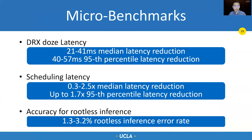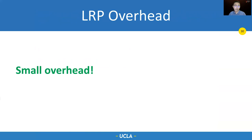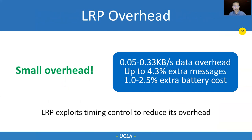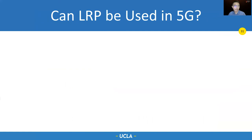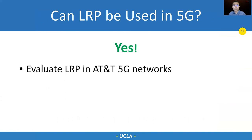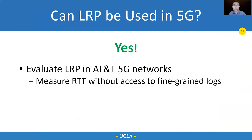With these improvements, LRP only generates small overhead — small extra data, small extra signaling messages, and marginal battery costs. We reduce LRP's overhead by carefully exploiting timing control. LRP can also benefit 5G applications. We evaluate this on AT&T 5G networks. Since we don't have access to any tool that can collect 5G fine-grained traces, we simply measure the RTT with and without LRP. The experiments show that LRP can achieve similar latency reduction in 5G as in 4G.